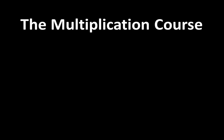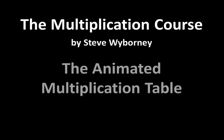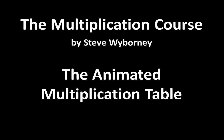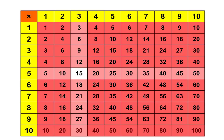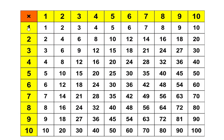Welcome to the Multiplication Course. My name is Steve Wyborny and this is the Animated Multiplication Table. Many years ago I created this Animated Multiplication Table so that I could click on any factor like 3 and any other factor like 7 and find the product. 3 times 7 is equal to 21.